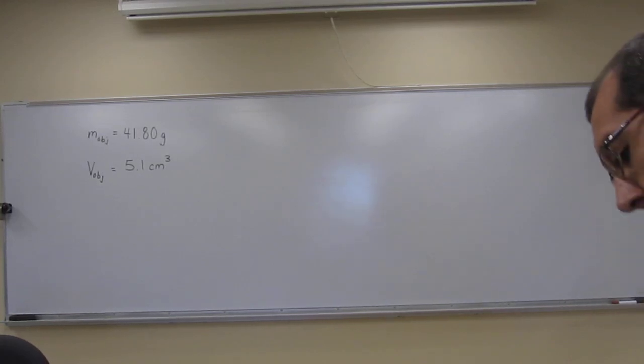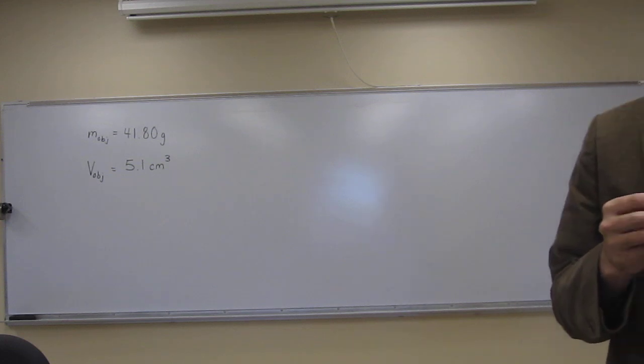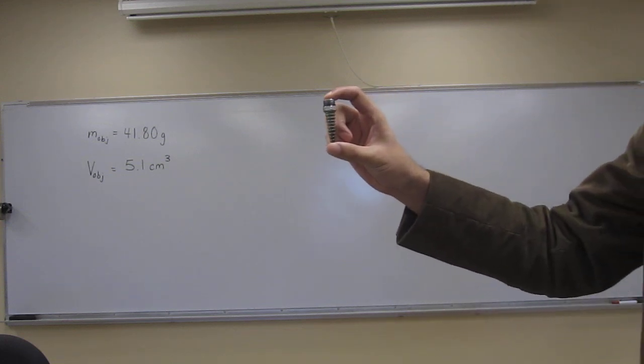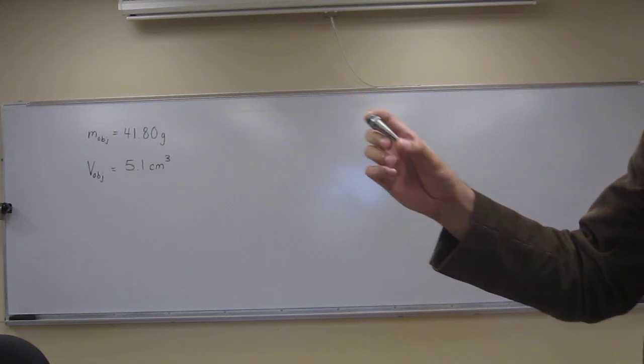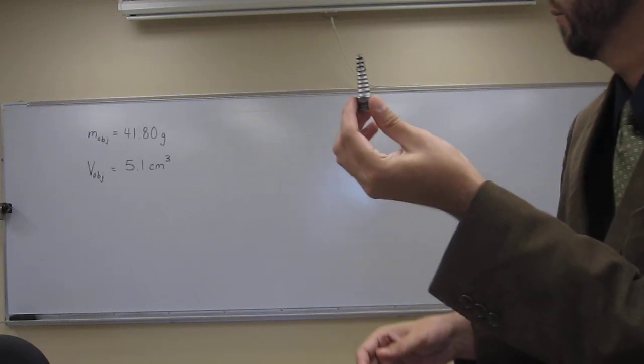Okay, so let's finish up this experiment. We've been trying to find the density of this irregularly shaped object, so this spigot from the chemistry sink. You guys can see this metal piece.